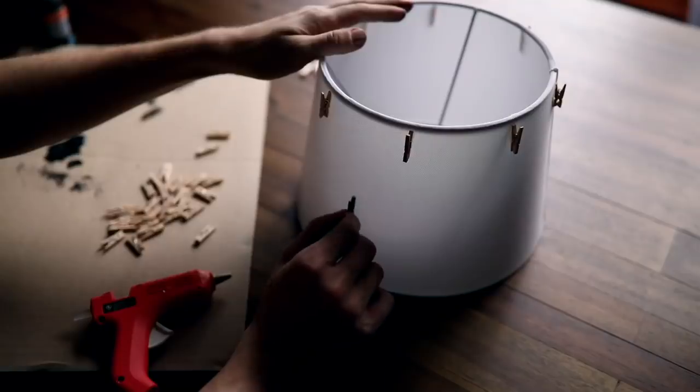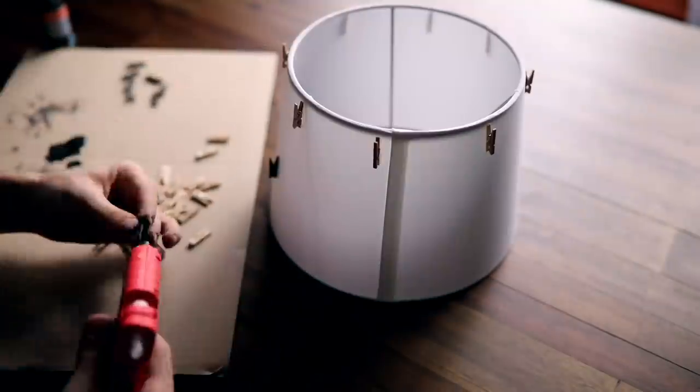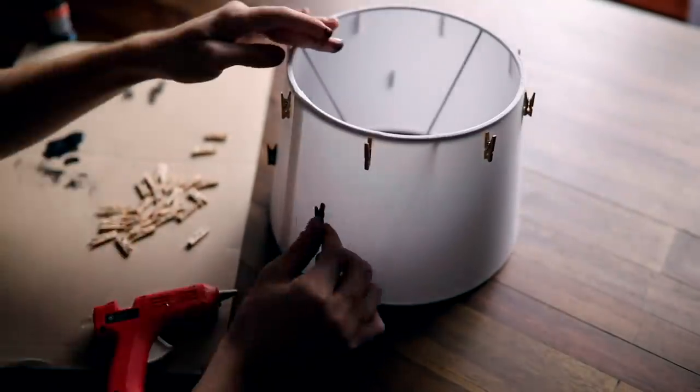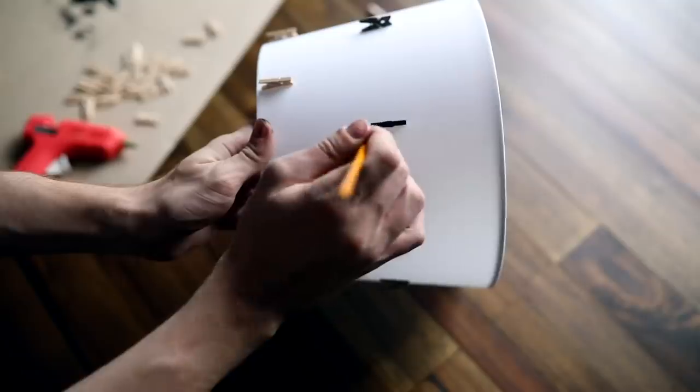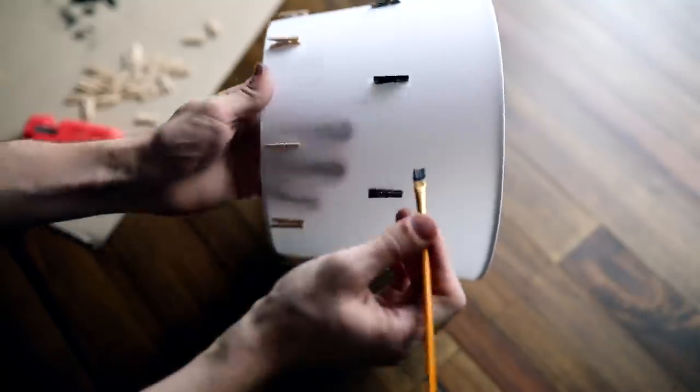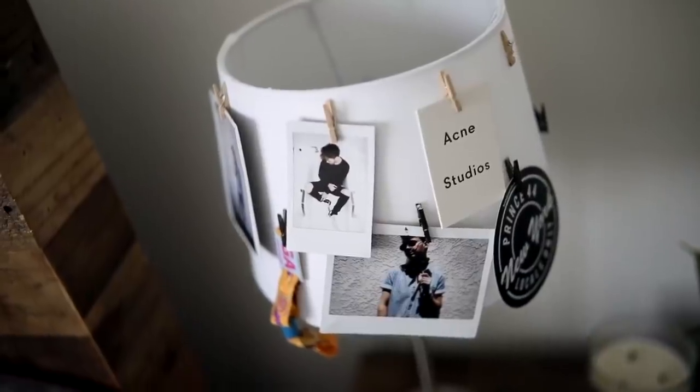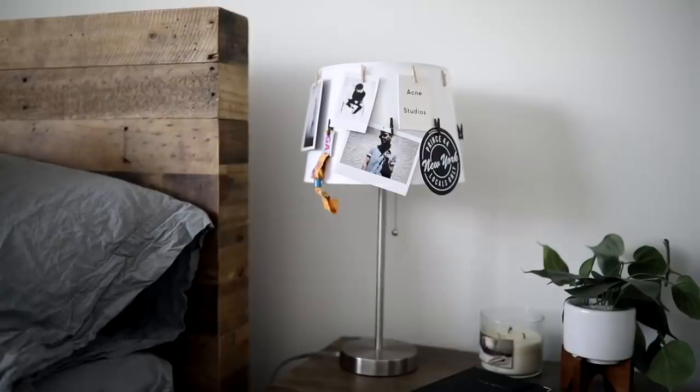I started by gluing the plain wood clips to the very top about every three inches. Then below that, in between, I glued the black clips. I finished off with a bit of paint on top of the black. You can clip your mementos on and that's your new lampshade.